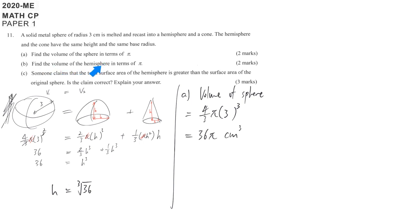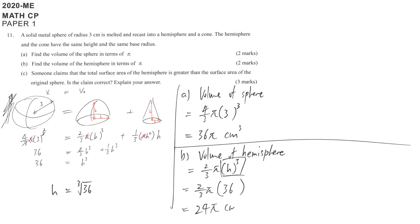And then in part B, they are talking about the volume of hemisphere. So this part we already finished, and then we get h power of 3. So now we can use it. You have to show, write this again here. And then you write down, the volume of hemisphere is equal to 2 over 3 pi, that means h power of 3. But we already know h power of 3, so it is 36. That means this is 24 pi cm cubed.